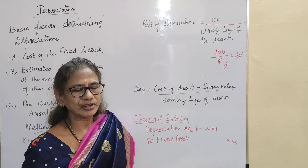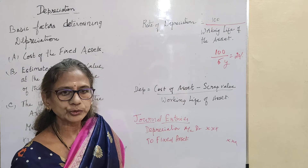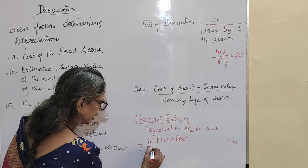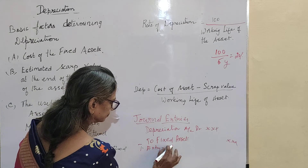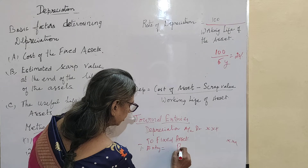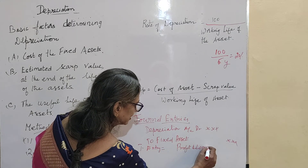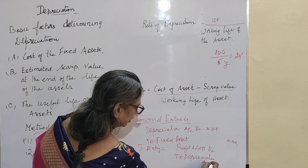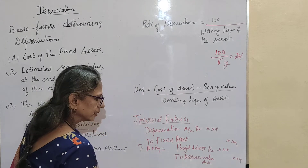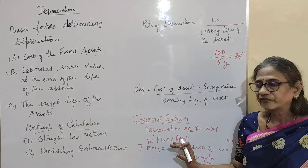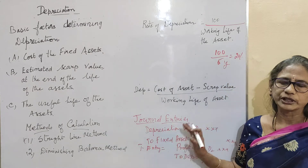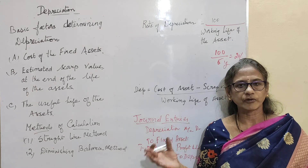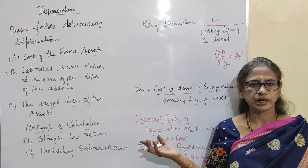After calculating depreciation, we transfer it to the Profit and Loss Account. This is the transfer entry: Profit and Loss Account is debited and Depreciation Account is credited. The reason Profit and Loss Account is debited is that all expenses and losses are written on the debit side of the Profit and Loss Account. In the next class, when we prepare the final accounts, we will see what items appear on the debit and credit sides of the Profit and Loss Account.